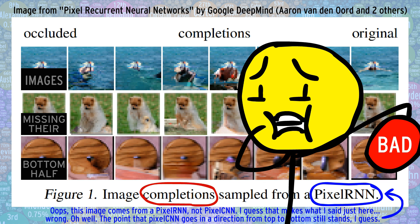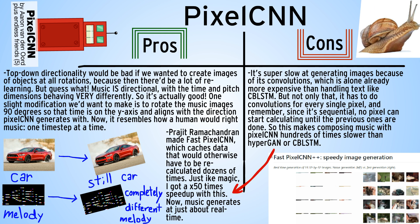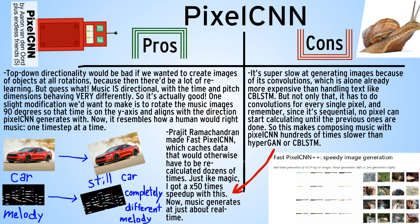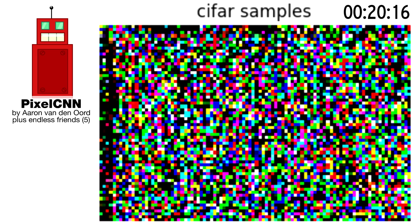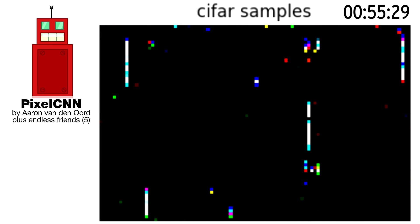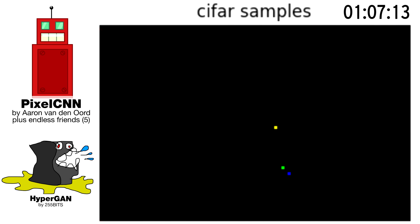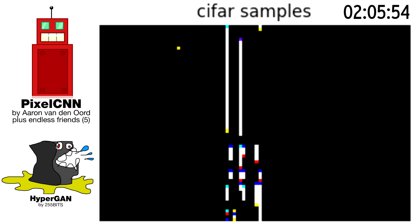Is that a good thing or a bad thing? I honestly have no idea, but in my opinion it's a good thing, because music is also directional. It doesn't go backward in pitch, forward in pitch, or backward in time — it only goes forward in time. So now we're watching PixelCNN train, and yeah, I'll admit, it's not as pretty as HyperGAN training. But you saw what the networks looked like. PixelCNN is rigid and square, in contrast to HyperGAN's curves and fluids, so of course their outputted images will reflect those traits.